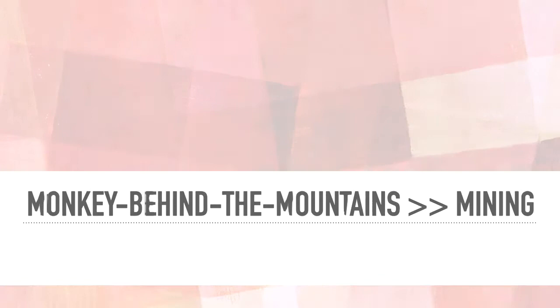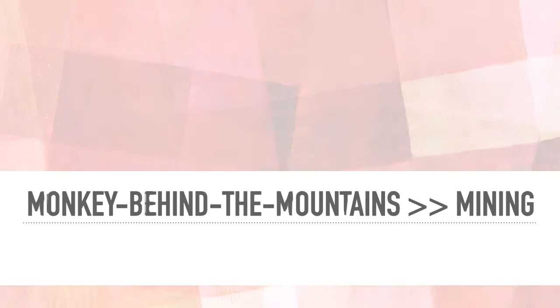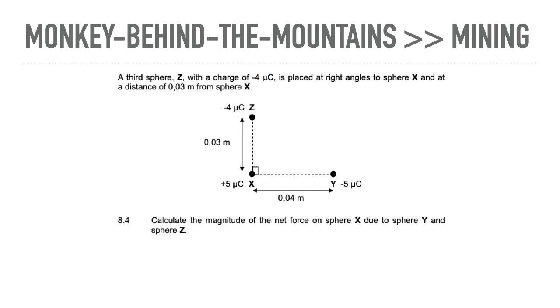Last but not least I'm going to have a look at a little weird question where we go from the monkey behind the mountains to mining. Now if I go from the monkey behind the mountains to mining, this is not found often in physical sciences, but a question like this next one is a good example. You've got two spheres working in on X. Calculate the magnitude of the net force on sphere X due to sphere Y and sphere Z. So before I actually look at all the info I'm first going to look at what they want me to solve, which is the magnitude of the net force on sphere X. That's my monkey.